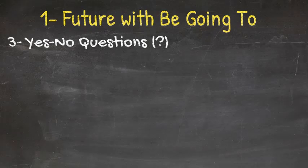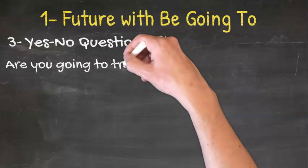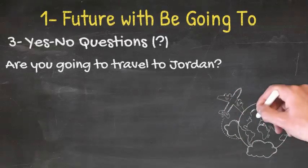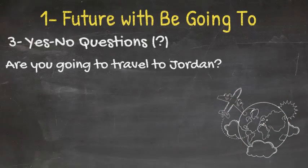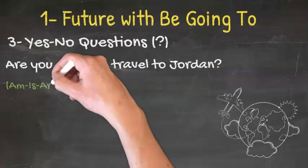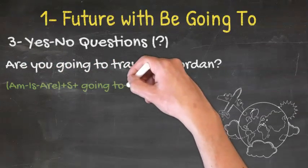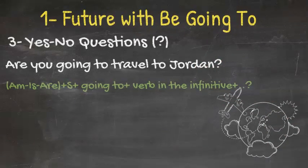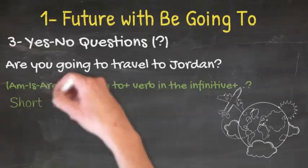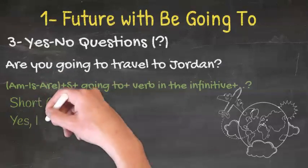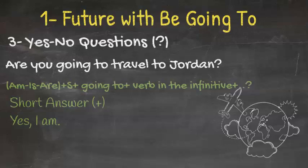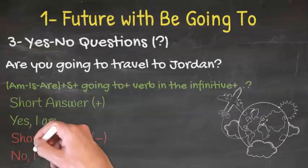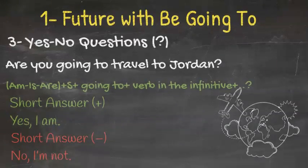Number 3, yes/no questions. For example, are you going to travel to Jordan? To form this type of question we will use am or is or are, plus subject plus going to plus verb in the infinitive. And don't forget about the question mark. To answer, we use yes I am for affirmative answer, and for the negative answer we will use no I am not.